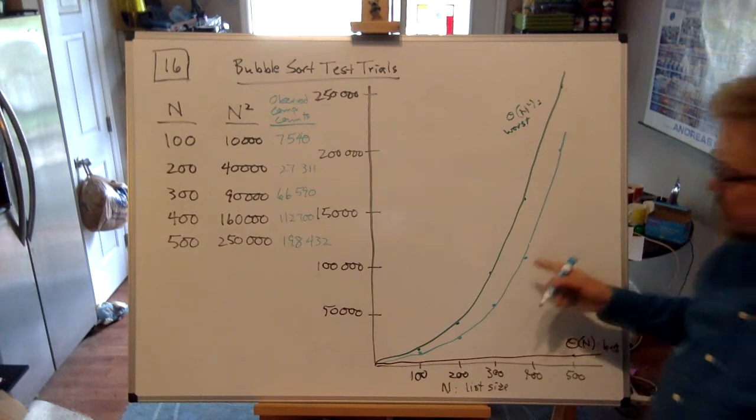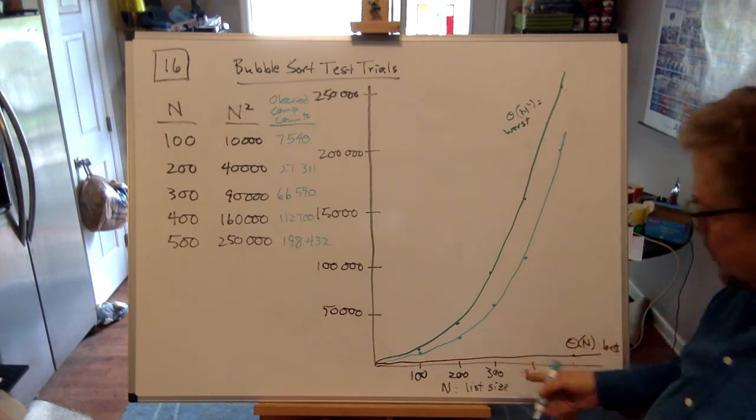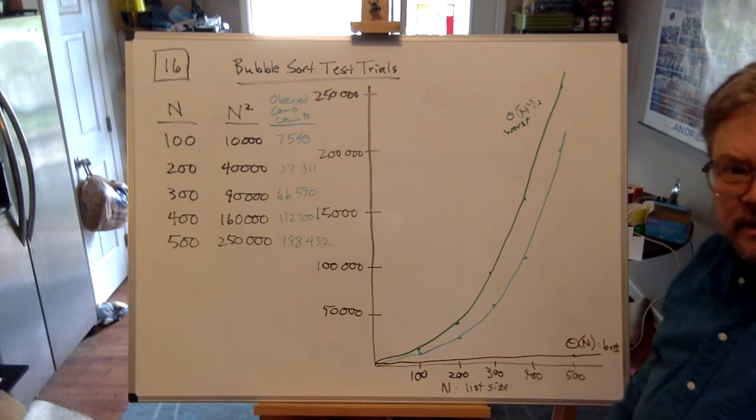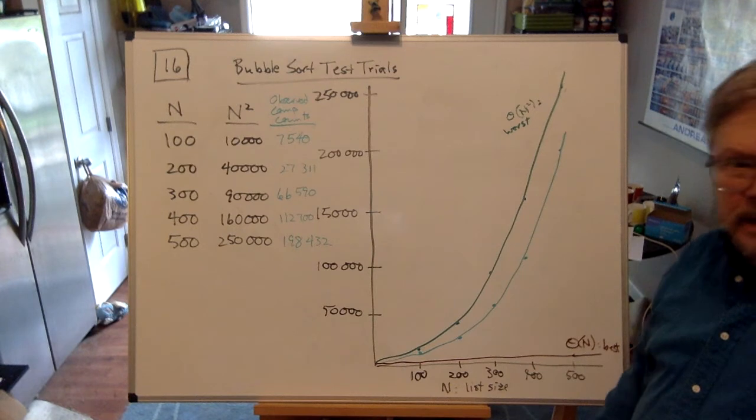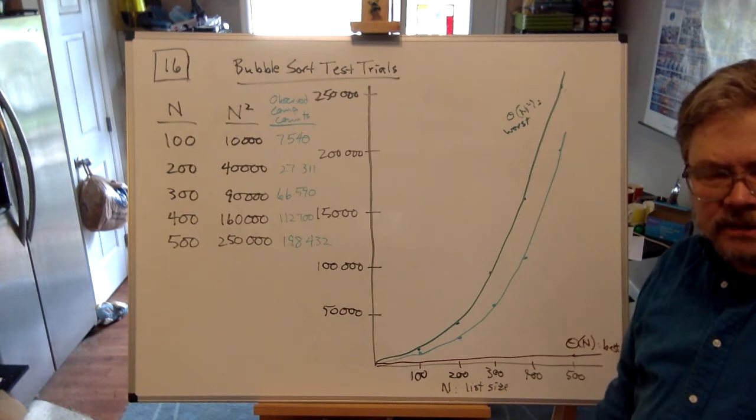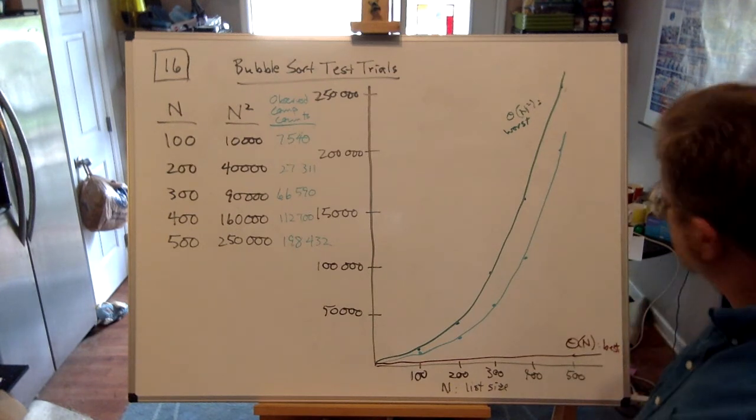Yes, you are going to get something that looks a lot more like n squared than order n. Isn't that how life is, though? I mean, things turn out to be closer to the worst case than the best case. There, a philosophy lesson for the day. Let's get philosophical.